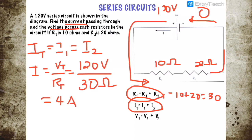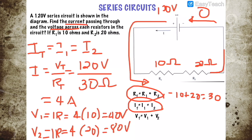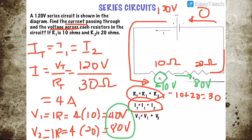The second part is finding the voltage across each resistor. The first resistor has voltage V equals IR: 4 times 10 equals 40 volts. The second resistor: 4 times 20 equals 80 volts. Notice that 40 plus 80 adds up to 120 volts — that is what we mean by Kirchhoff's Voltage Law.